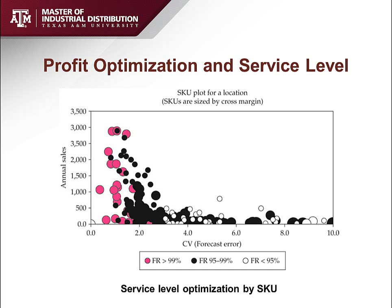The profit optimization and service level figure classifies products based on annual sales and coefficient of variation, which is standard deviation divided by the mean. Products with a small coefficient of variation and high sales are classified as A items with fill rate over 99%. B items have relatively small sales numbers with a target customer service level of 95% to 99%. Items with high coefficient of variation and low sales fall below 95%.